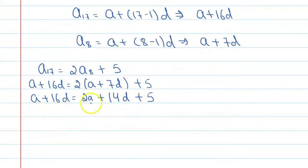From here you can say that A minus 2A plus 16D minus 14D is equal to 5. So this will become minus A plus 2D equal to 5.